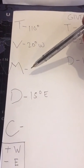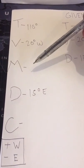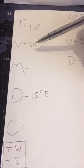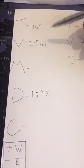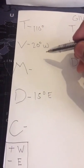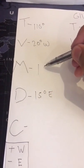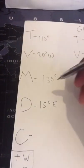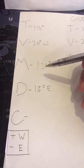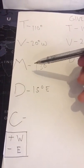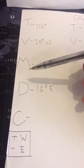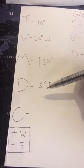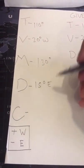To find the magnetic course, we need to simply add 110 degrees and 20 degrees, so we get 130 degrees. To get the compass, we need to subtract the deviation from the magnetic course: 130 degrees minus 15 equals 115 degrees.